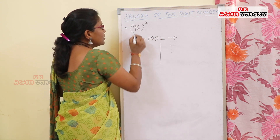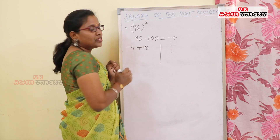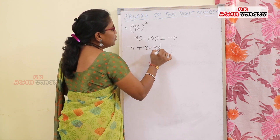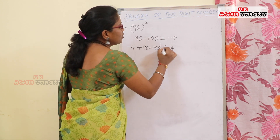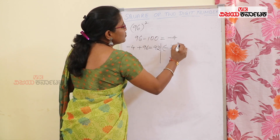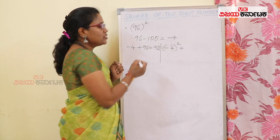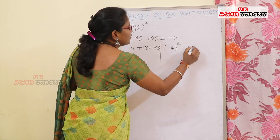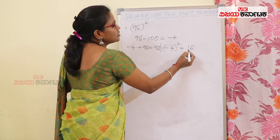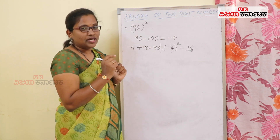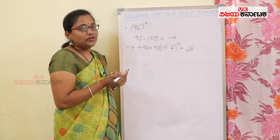The minus 4 is added to 96 to get 92. Minus 4 squared is always positive, so that means we add 16. How many digits are there in the base 100?